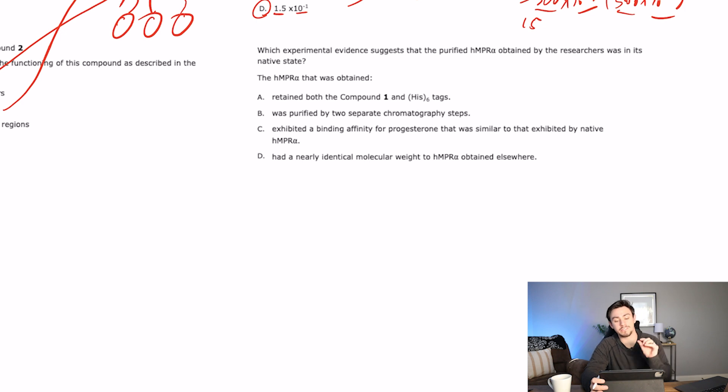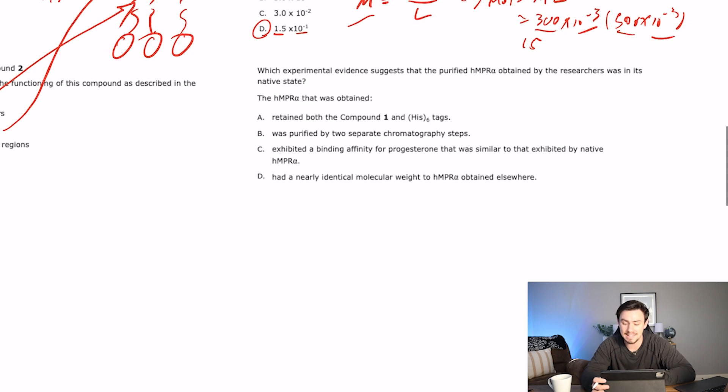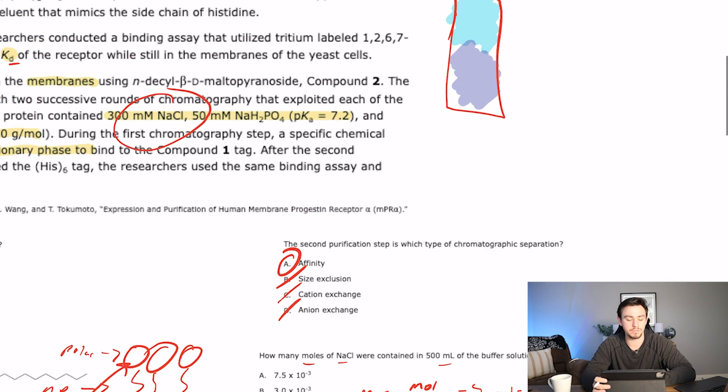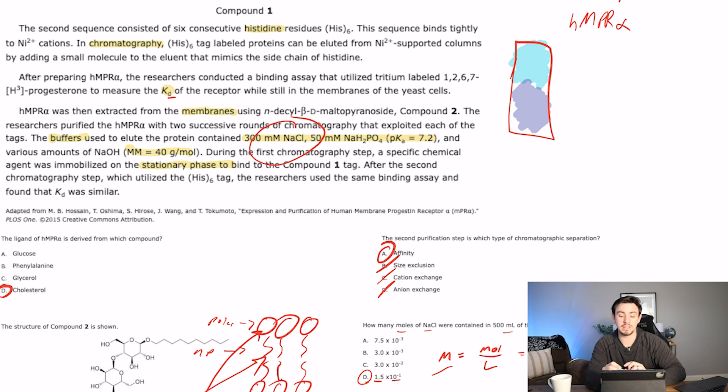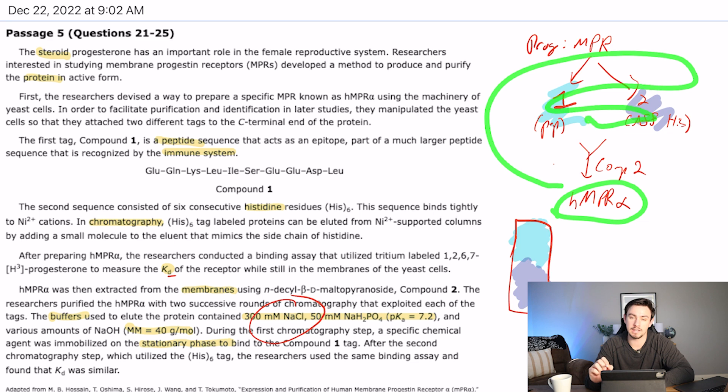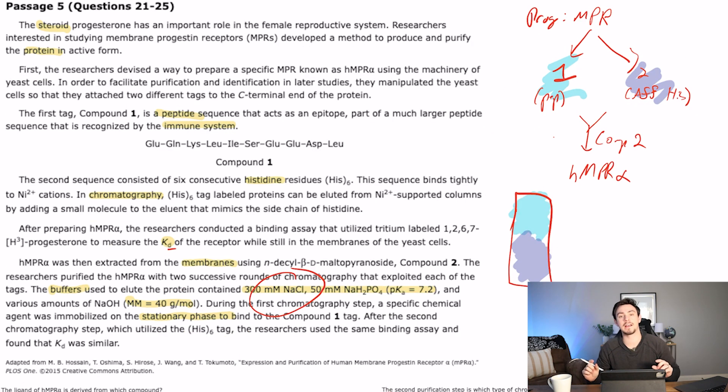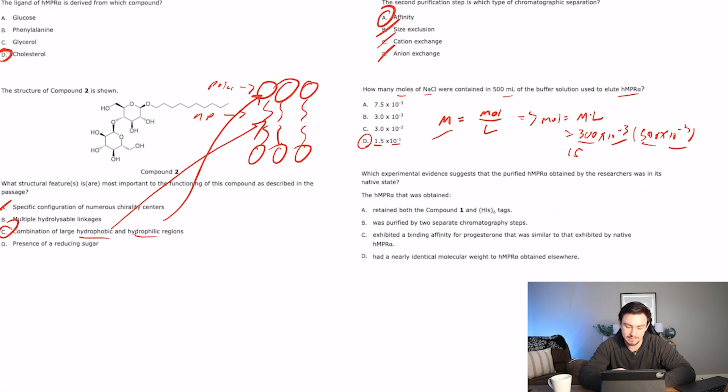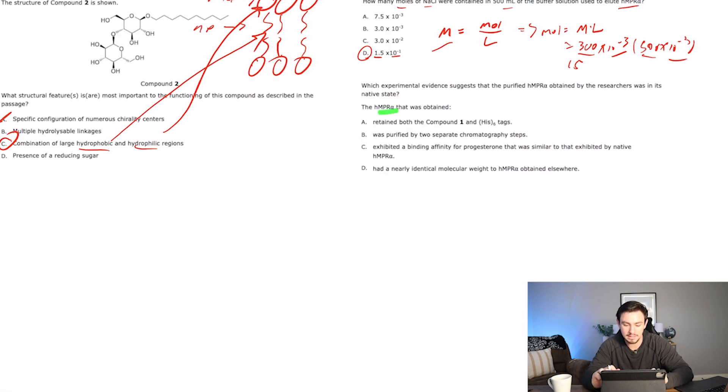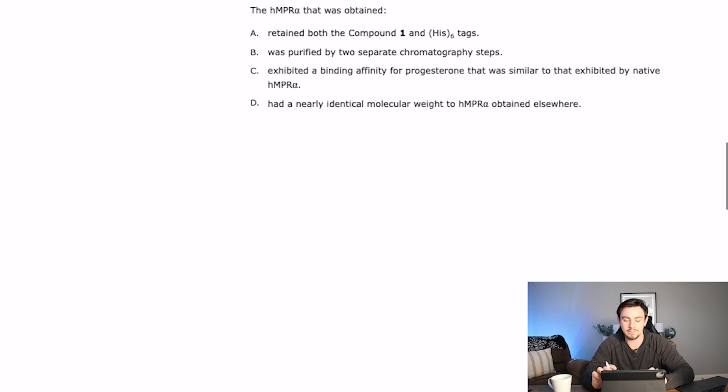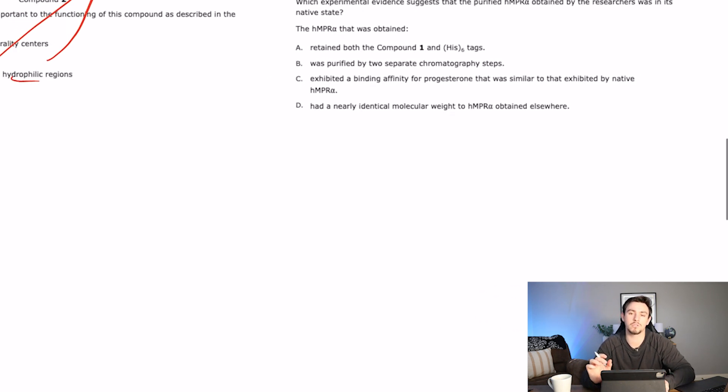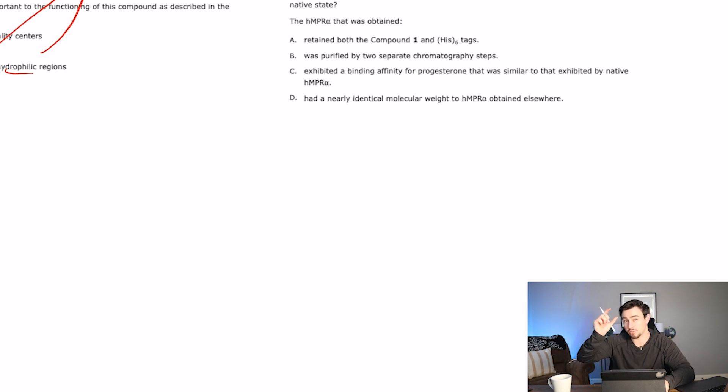And number last says, which experimental evidence suggests that the purified HNPR alpha obtained by the researchers was in its native state? Okay, so I think what they're trying to say here is at the very end, whenever they took this HNPR alpha, and they ran it back through these purification processes, what's the biggest sign that what we had to begin with was HNPR alpha? So let's read the answer choices. A says that the HNPR alpha that was obtained retained both compound 1 and histidine tags. That's not how chromatography works. You don't retain those. You actually pass through those. So I don't like A.